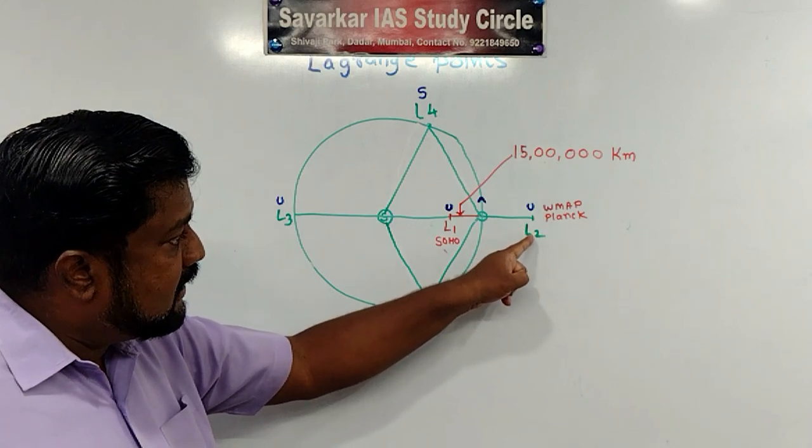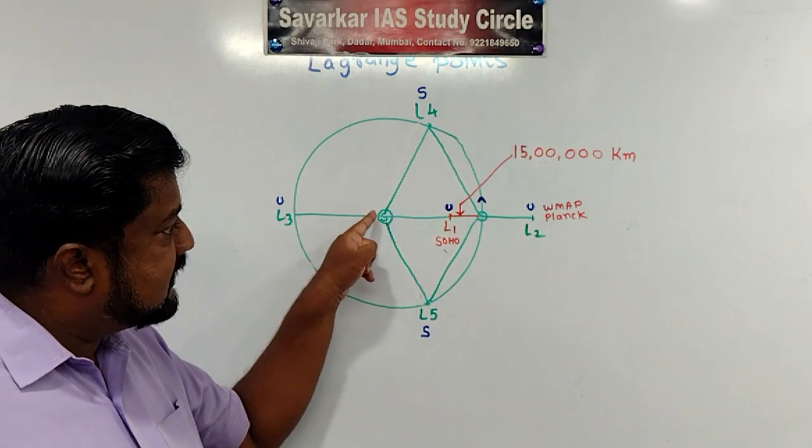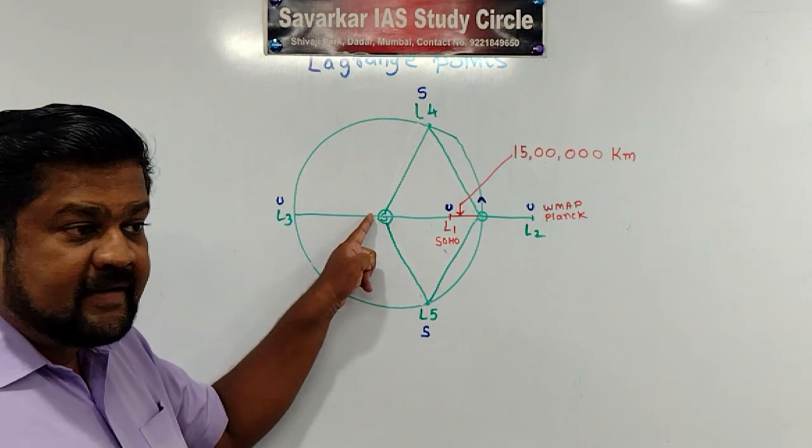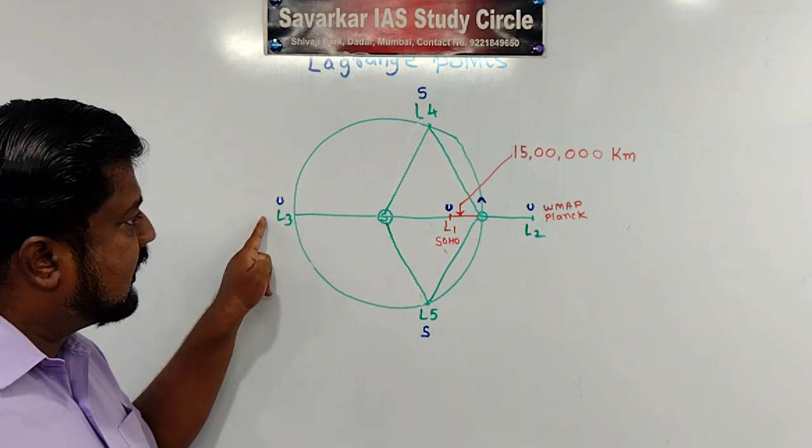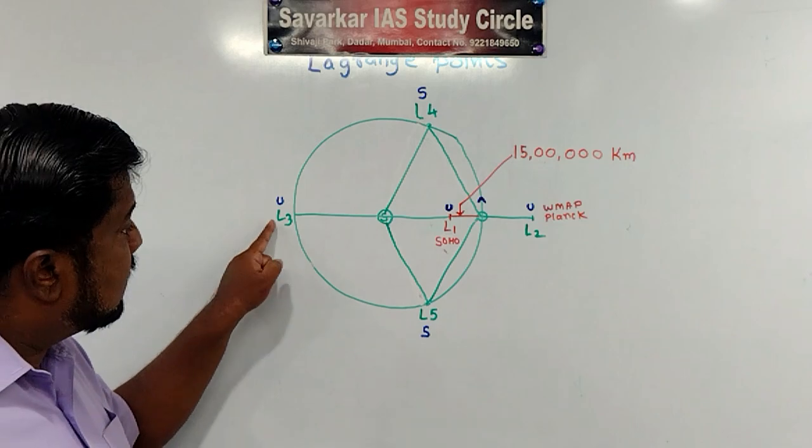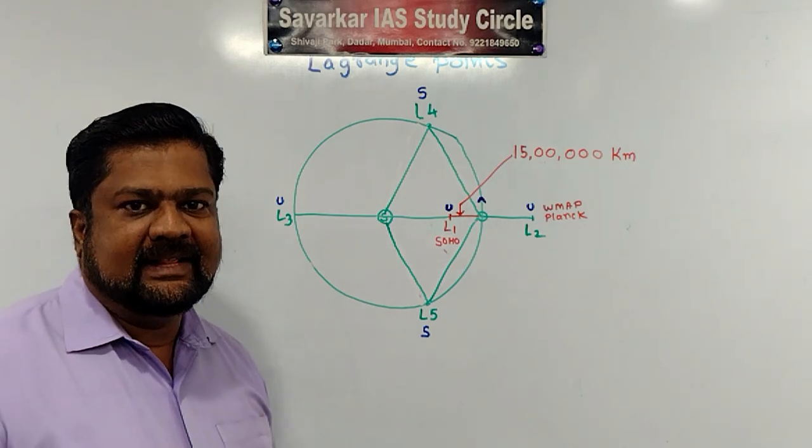Now suppose I am joining the line L2, Earth, L1, Sun. They are all collinear here. This line is extended towards Earth's orbit. Then third point is there. That is called as L3 point.